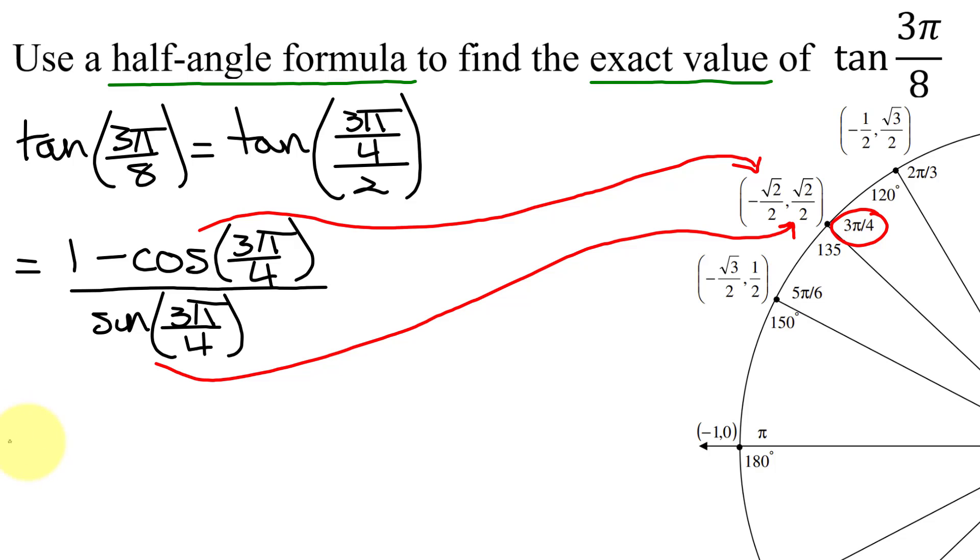So I'm going to get 1 minus the cosine is negative the square root of 2 over 2, all divided by the sine of 3π over 4 that is the positive square root of 2 over 2.